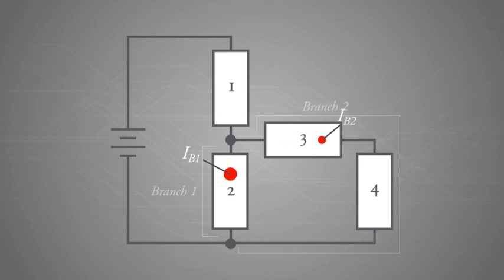Notice that the current does not split equally in this simulation. IB1 is larger than IB2. This is an indication that branch one of the circuit has a decreased opposition to current flow compared to branch two, or simply put, branch one is less resistive than branch two.